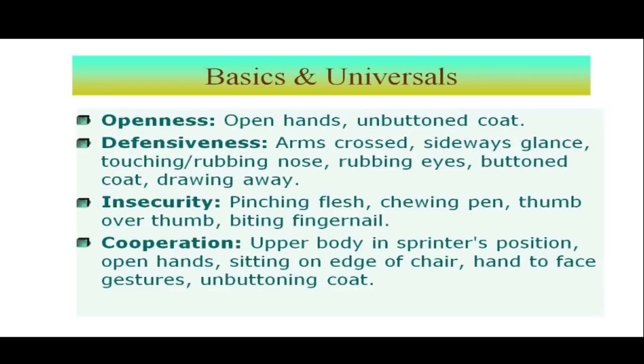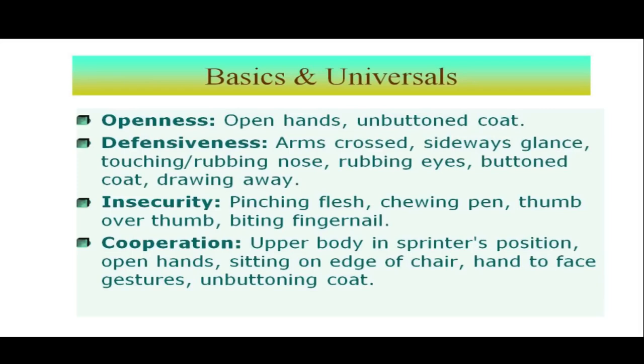More on basics and universals: any gesture that is not crossed — open hands, open palms, even an unbuttoned coat — indicates openness, honesty, truthfulness, and a willingness to talk. The opposite is defensiveness: arms crossed, looking sideways while talking, not maintaining eye contact, touching or rubbing the nose, rubbing eyes, buttoning a coat, or drawing away from the other person. When you talk and the other person keeps moving away, it indicates they are in a defensive mode.